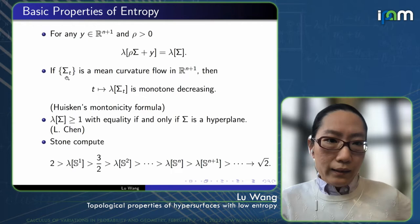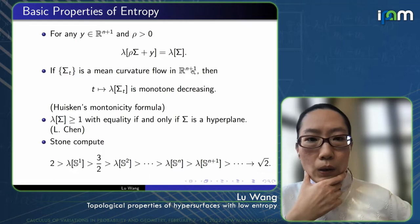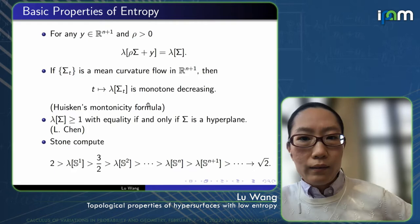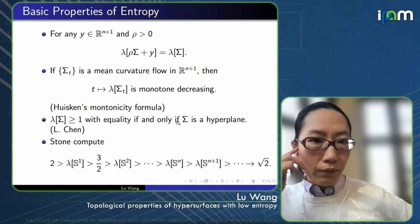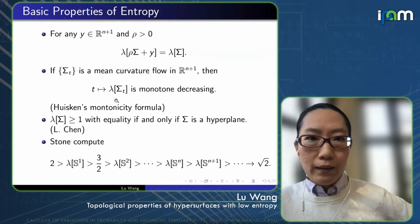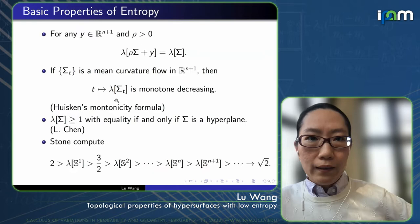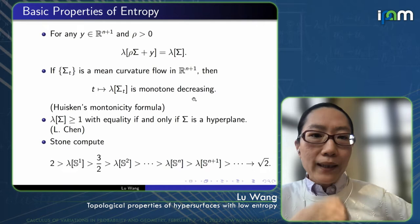Second, if one has a mean curvature flow in Euclidean space, then this entropy is monotone decreasing under the flow. This is basically a consequence of Huisken's monotonicity formula for the flow. This property is one of the most important properties of entropy in connection with the flow, which makes the quantity very useful in study of properties of the flow.